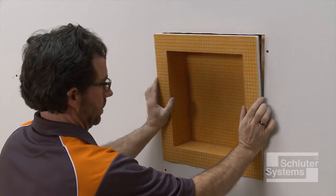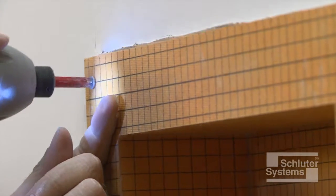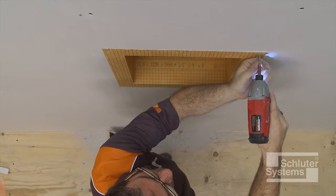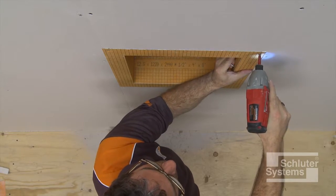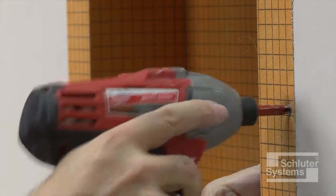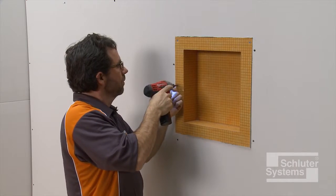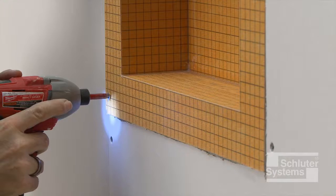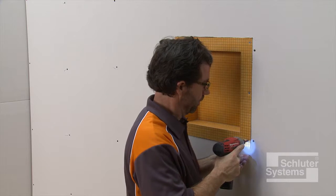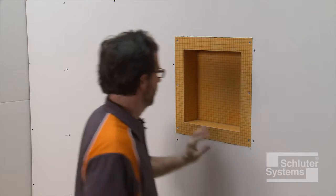Insert the niche and fasten to the studs using the appropriate screws. Fasteners are placed along the seam approximately one-quarter inch from the edges of the niche. Fasten all corners and limit overall fastener spacing to 12 inches on center.